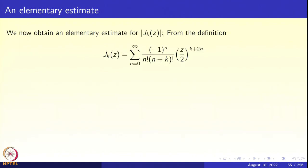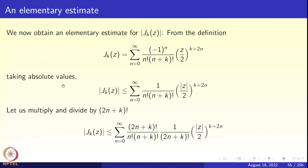We are going to get an elementary estimate on J_K's. Recall J_K(z) = summation n from 0 to infinity of (-1)^n / (n! * (n+k)!) * (z/2)^{k+2n}. We want to take the absolute value, apply the triangle inequality, so the absolute value goes inside the summation and the (-1)^n goes away, giving |z/2|^{k+2n}.